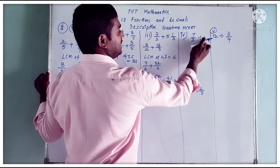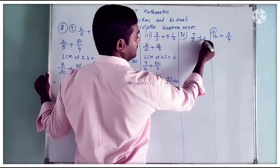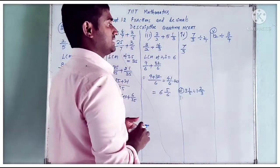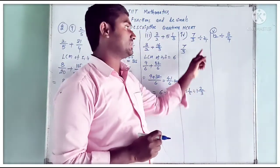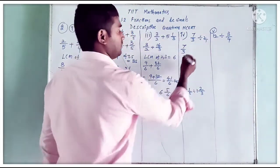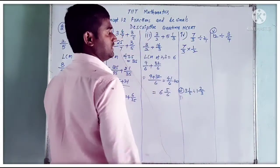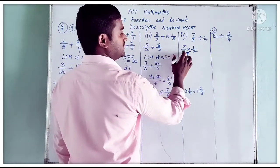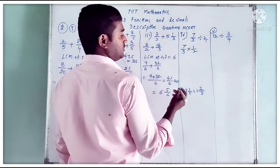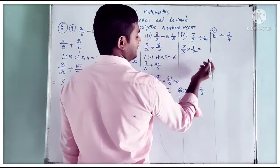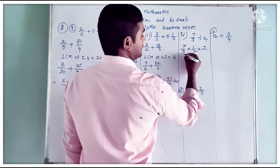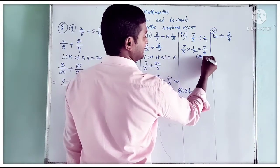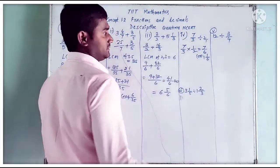Fourth part: 7 by 3 divided by 2. The whole number 2 has no denominator, so write it as 2 by 1. When dividing two fractions, we do the reciprocal of the divisor fraction. Reciprocal of 2 by 1 is 1 by 2. Now we multiply: check for cancellation — 7 by 3 into 1 by 2. No cancellation possible. So numerator into numerator: 7 by 1 is 7. Denominator into denominator: 3 by 2 is 6. Answer is 7 by 6, or in mixed fraction, 1 and 1 by 6.